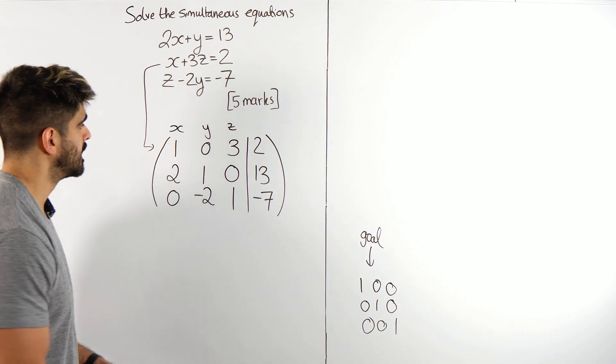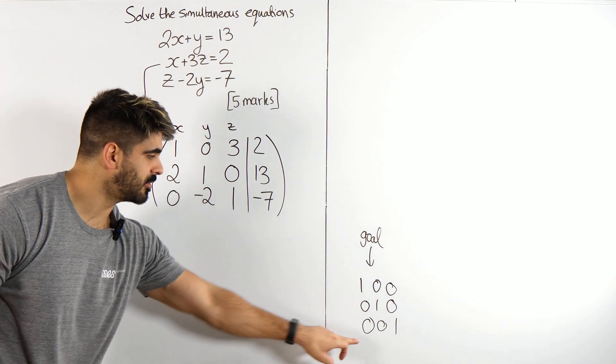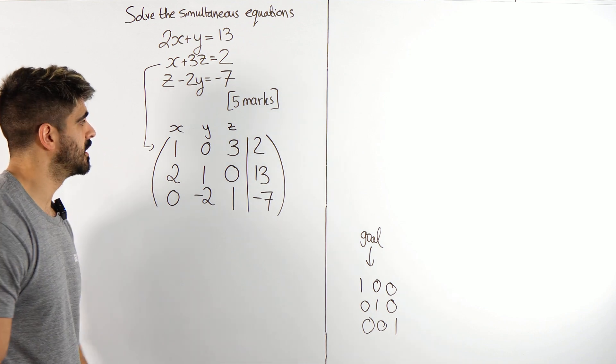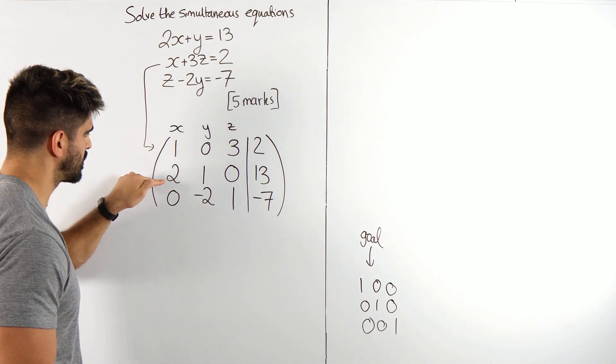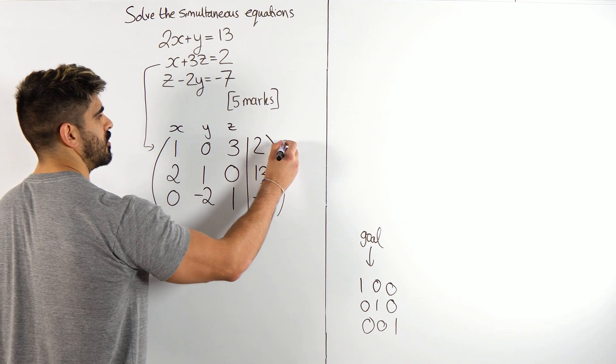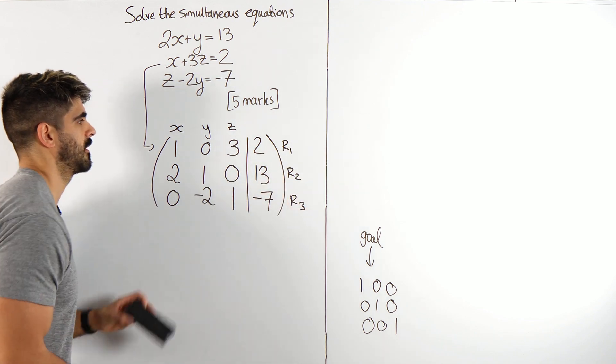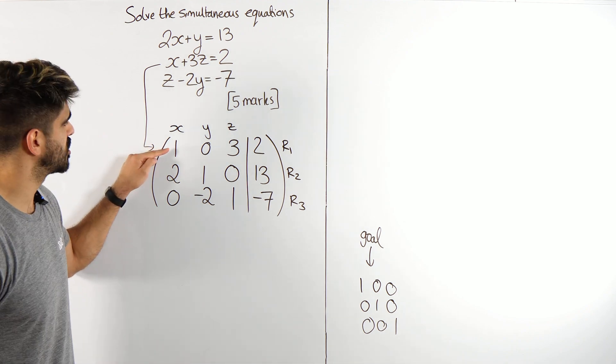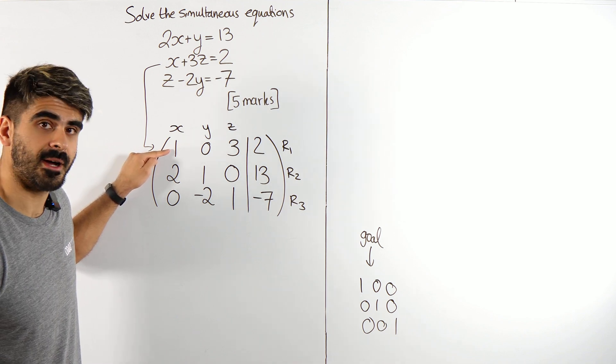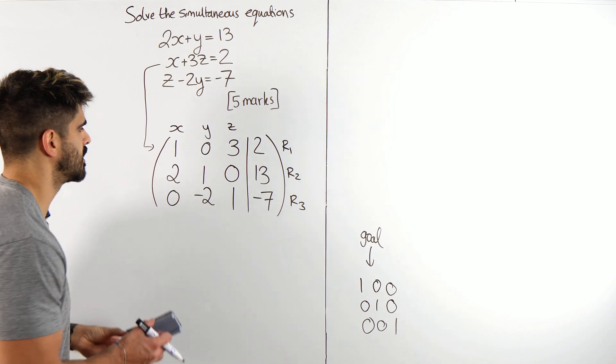What do we need then? I need this number here to be a 0, because the 0 is the same. I need this to be a 0. So what do I need to do? I'm going to use this line to turn that into a 0. How do I do that? I'm going to call this row 1, row 2, row 3. I'm going to take row 1, which has a 1 here, I'm going to times that by minus 2, that'll make that minus 2, and add it to this. That's going to make it 0.